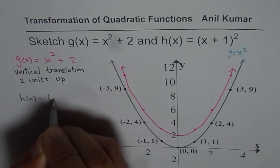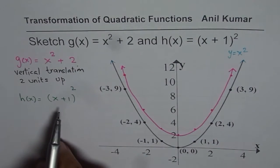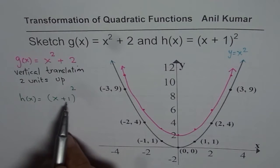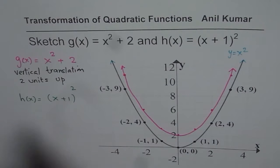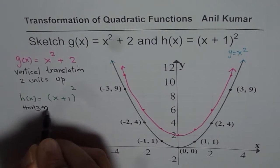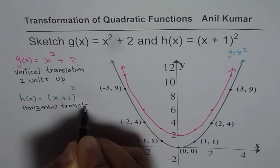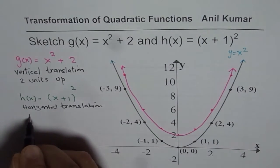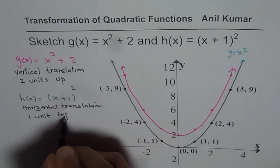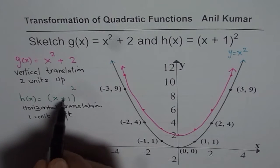Now let's look at the second function, h of x equals x plus 1 whole square. What is the translation here? Since plus 1 is within the brackets, we have a horizontal translation in this case. We translate 1 unit to the left — if we write x minus 1 it would equal zero, which is why the shift is towards the left.